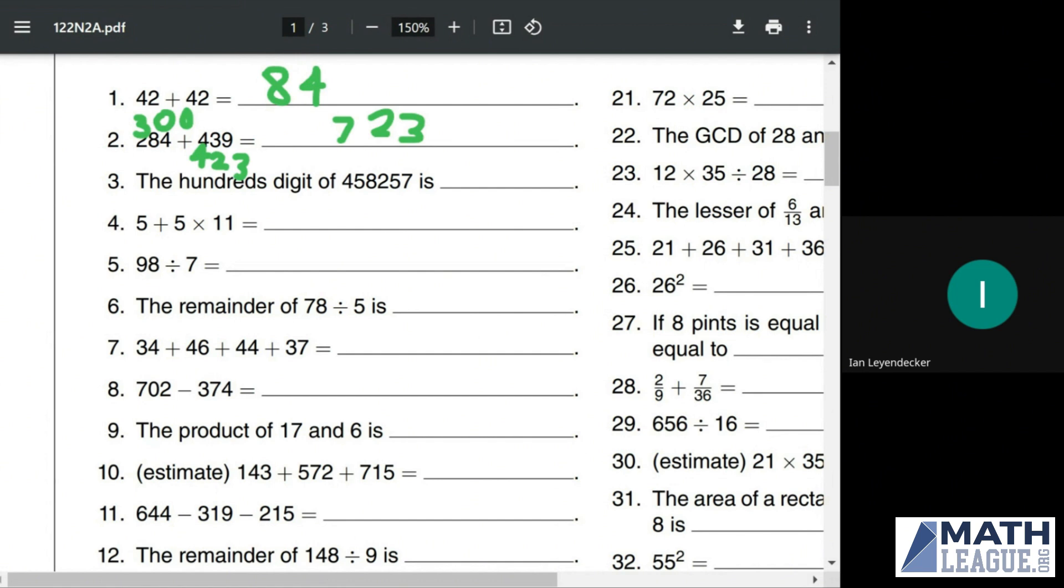The hundreds digit of 458,257. You should know that the first digit from the right is the ones digit, then the tens, and then the hundreds. In this case, it will be 2.